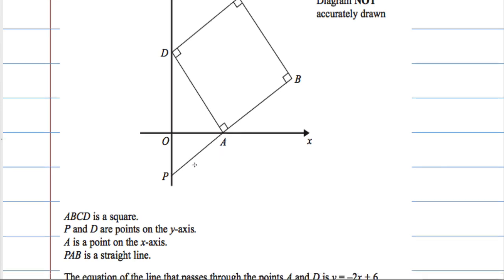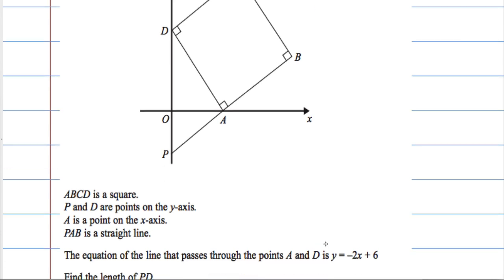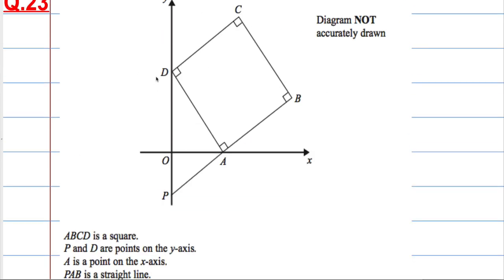PAB is a straight line, and the equation of the line that passes through A and D is y equals minus 2x plus 6. We're asked to find the length of PD. So we're asked to work out this length here, from P to D. That's what we want to work out.